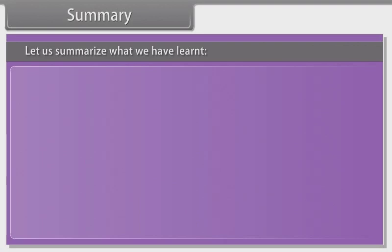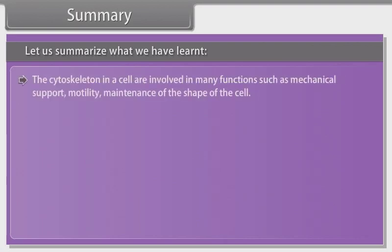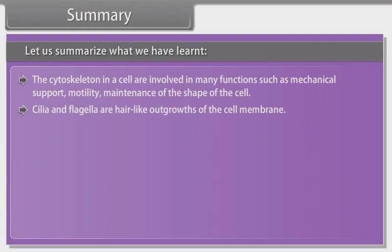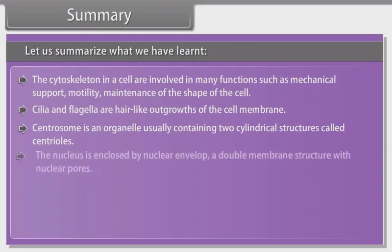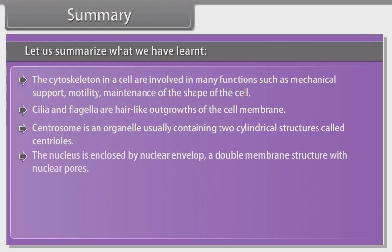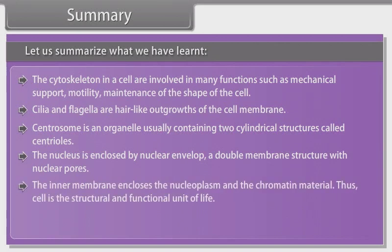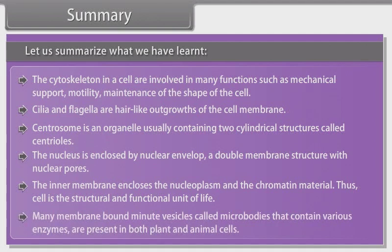Summary: Let us summarize what we have learned. The cytoskeleton in a cell is involved in many functions such as mechanical support, motility, and maintenance of the shape of the cell. Cilia and flagella are hair-like outgrowths of the cell membrane. Centrosome is an organelle usually containing two cylindrical structures called centrioles. The nucleus is enclosed by the nuclear envelope, a double membrane structure with nuclear pores; the inner membrane encloses the nucleoplasm and the chromatin material. Thus, cell is the structural and functional unit of life. Many membrane-bound minute vesicles called microbodies that contain various enzymes are present in both plant and animal cells.